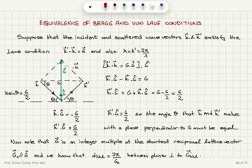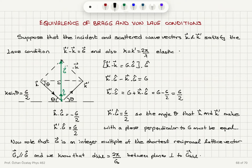Now we're going to show the equivalence of Bragg and Von Laue diffraction conditions. Suppose that the incident and scattered wave vectors satisfy the Von Laue condition — that is, the change in the k vector equals a reciprocal lattice vector g. We have elastic scattering, so the magnitudes of k and k prime are the same.